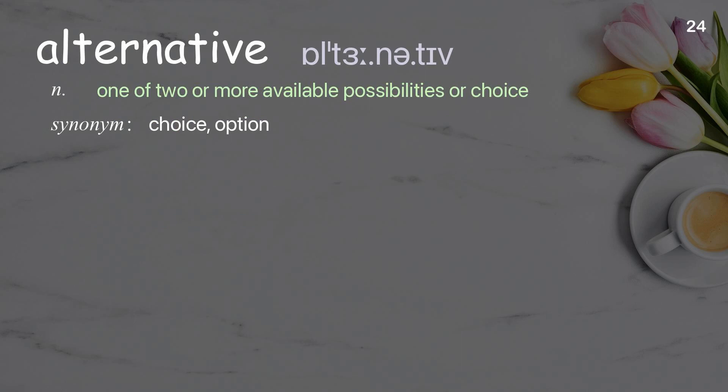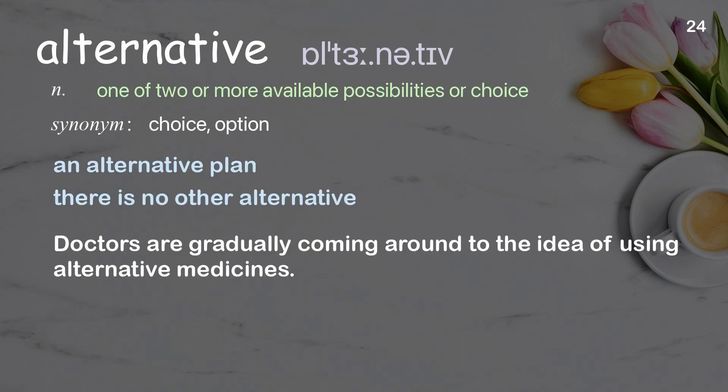Alternative: one of two or more available possibilities or choices. Examples: an alternative plan, there is no other alternative. Doctors are gradually coming around to the idea of using alternative medicines.